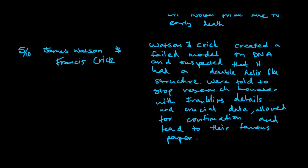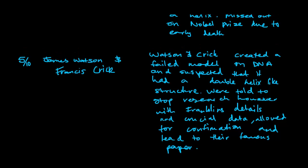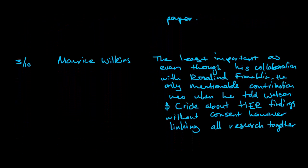However, after Franklin's research and her findings, it was passed on to them by someone called Maurice Wilkins. Now, Maurice Wilkins, he was said to be working with Rosalind Franklin at the time, but his importance is only three out of ten, mainly because he didn't actually find anything.